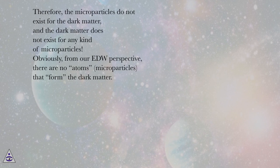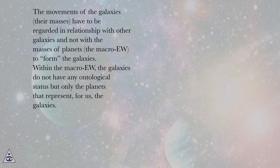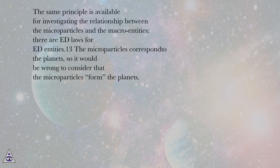The movements of the galaxies, their masses, have to be regarded in relationship with other galaxies and not with the masses of planets, the macro-EU, to form the galaxies. Within the macro-EU, the galaxies do not have any ontological status but only the planets that represent, for us, the galaxies.